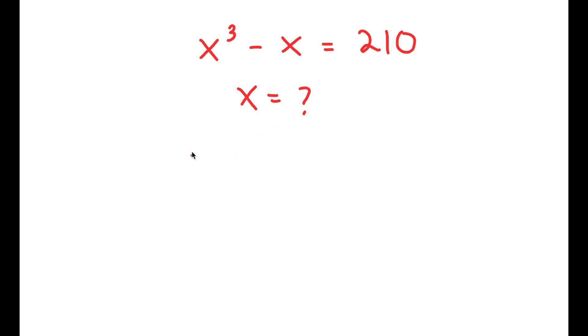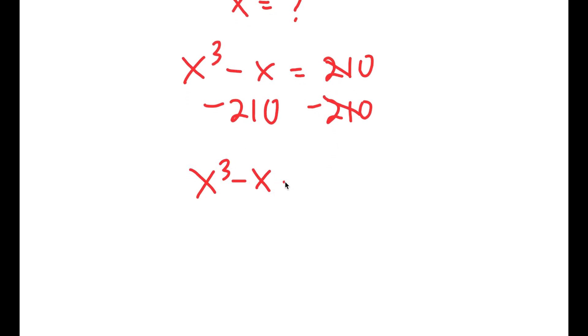So I'm going to first start by subtracting 210 on both sides. So now these two cancel out, and I get x to the power of 3 minus x minus 210 is equal to 0.